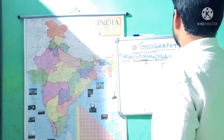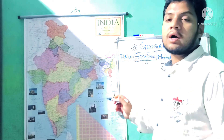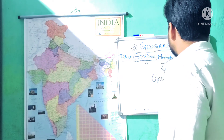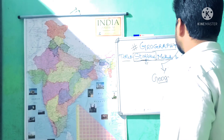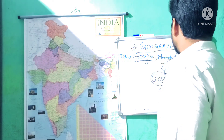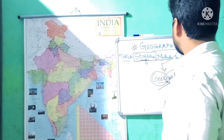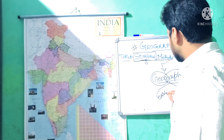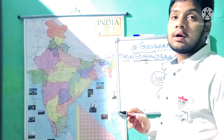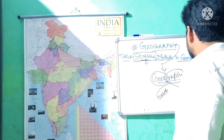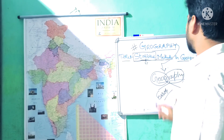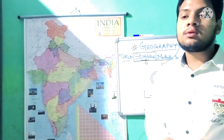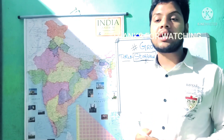Geography is derived from two Greek words: 'geo' and 'graphy.' Geo means earth, and graphy means nature or description. So we are studying the earth's description or nature. Geography plays the relationship between people and their environment. Thank you.